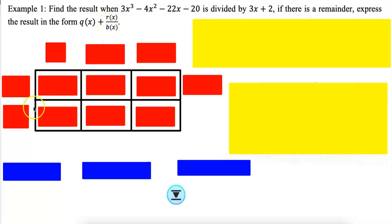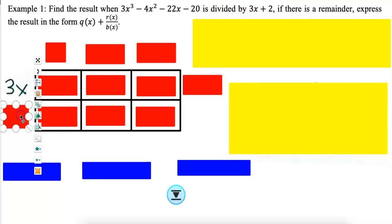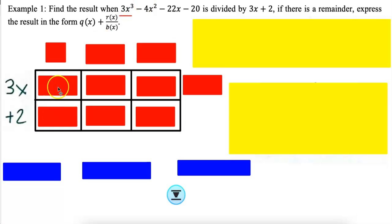I'm going to draw my box. It's always going to have two lines because we're always dividing by two terms. Your first step is to take what you're dividing by — 3x and plus 2 — and put them on the outside left of your box. Then take the 3x cubed and put it inside the box.